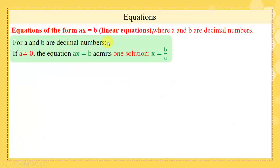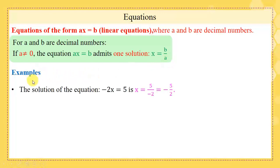Solving equations of the form ax equals b, also called linear equations, where a and b are decimal numbers. If a is different from zero, the equation ax equals b admits one solution, which is x equals b over a, where a is the coefficient of x. For example, the solution of negative 2x equals 5 is x equals 5 over negative 2, which equals minus 5 over 2.